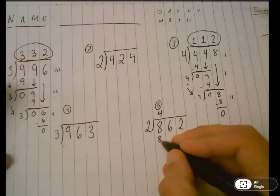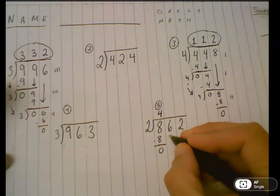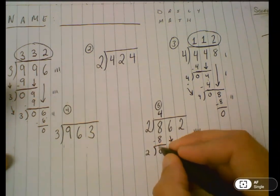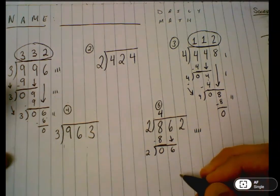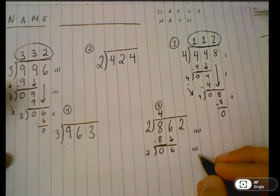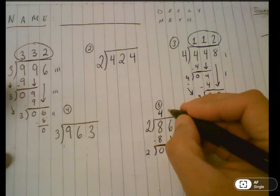Four times two is eight. Subtract, bring down, and repeat. Skip count by two until I get close to six. There's part of my quotient again. It goes here.